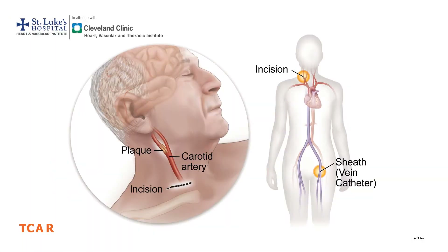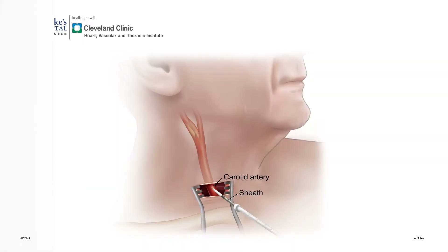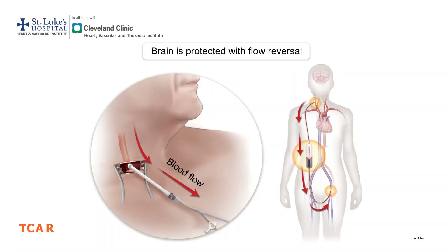Most TCAR procedures are performed under general anesthesia through a small incision at the base of the neck, just above the collarbone. Additionally, a large IV or venous sheath is placed in the femoral vein. Through the small incision, an arterial sheath is placed in the common carotid artery, well away from the area of disease. The side port on the arterial sheath is then hooked up to a filter, which is then hooked up to the large IV or the femoral venous sheath.